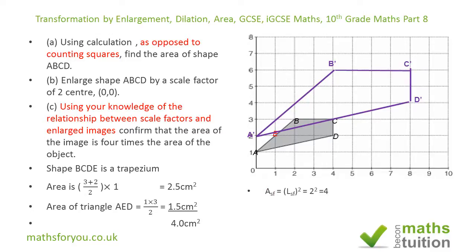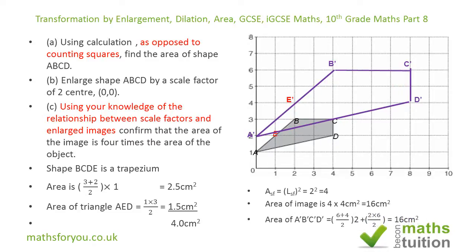Since the area of the object is 4.0 cm², we expect the enlarged area to be 4 times 4, which is 16 cm². To confirm, introducing E prime gives an enlarged trapezium with parallel sides 6 and 4, summing to 10, divided by 2 gives 5, times height 2 gives 10 cm². The enlarged triangle has height 2 and base 6, so 2 times 6 is 12, divided by 2 gives 6 cm². Then 6 plus 10 gives 16 cm².